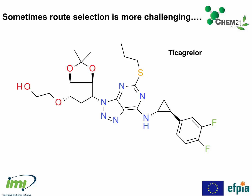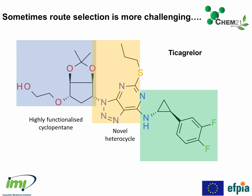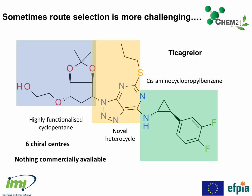But sometimes route selection can be much more challenging. If we look at this molecule, triglycerol, it's altogether more thought provoking. It has a number of challenging synthons: a highly functionalized cyclopentane ring, a novel heterocyclic core, and an amino cyclopropyl benzene fragment. It also has the complexity of six chiral centers that have to be controlled, and at the start of the project, none of these main synthons were commercially available. So a much more challenging structure.